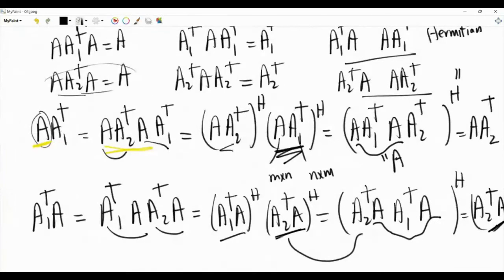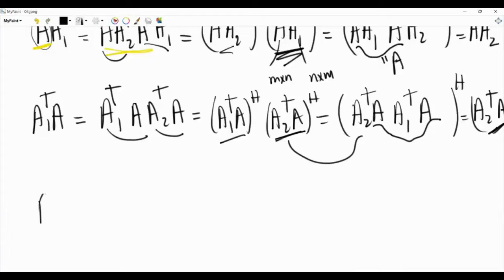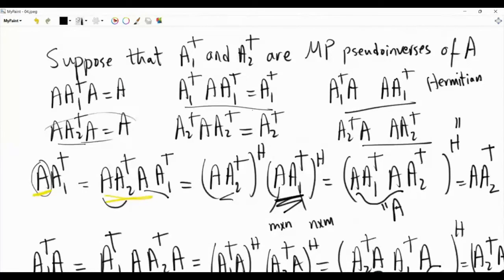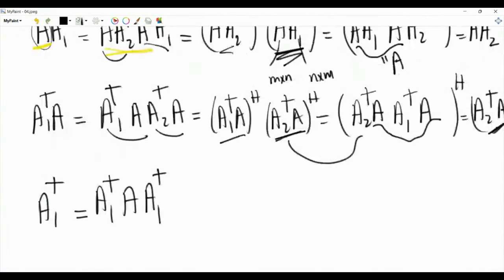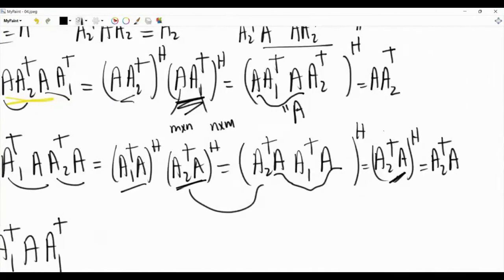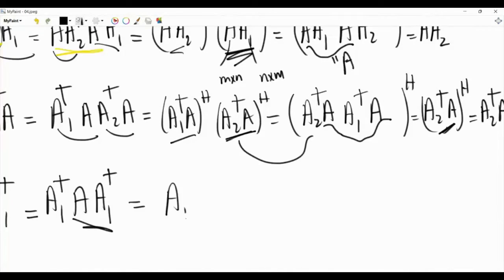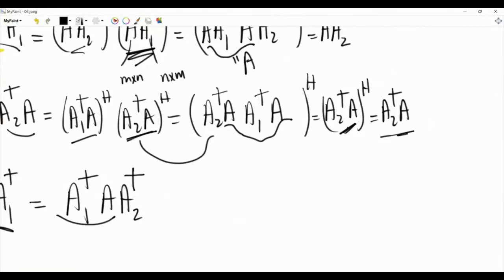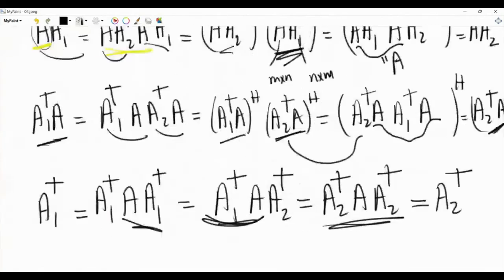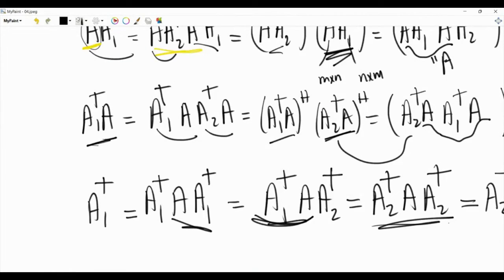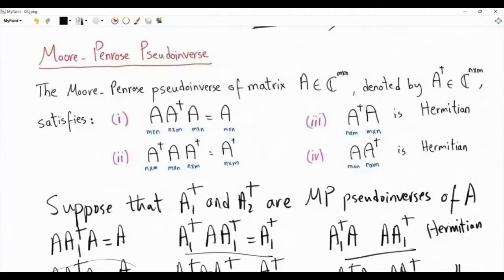Now we have our final step to show that A1-dagger must equal A2-dagger. Take A1†: by the second property, A1† = A1†·A·A1†. We proved that A·A1† = A·A2†, so we replace accordingly, and also A1†·A = A2†·A, giving us A2†·A·A2†. Since A2-dagger is a Moore-Penrose pseudo-inverse, this equals A2†. Therefore A1† = A2†, proving the pseudo-inverse is unique.